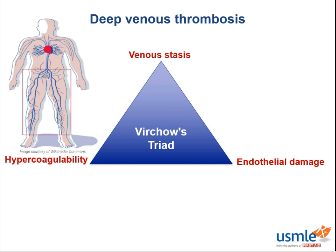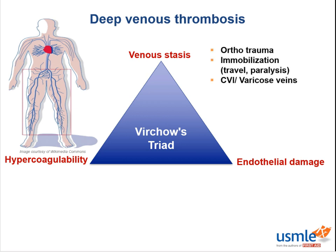So now that we know the triad, we can work out risk factors that predispose someone to DVT. A prime example of venous stasis is prolonged immobility. This could be due to paralysis, like someone with Guillain-Barré syndrome or ALS, or it could be due to orthopedic trauma like someone with a femur fracture — hey, that would probably also cause endothelial damage — or it could be simply due to prolonged travel. Another cause of venous stasis is chronic venous insufficiency or varicose veins.